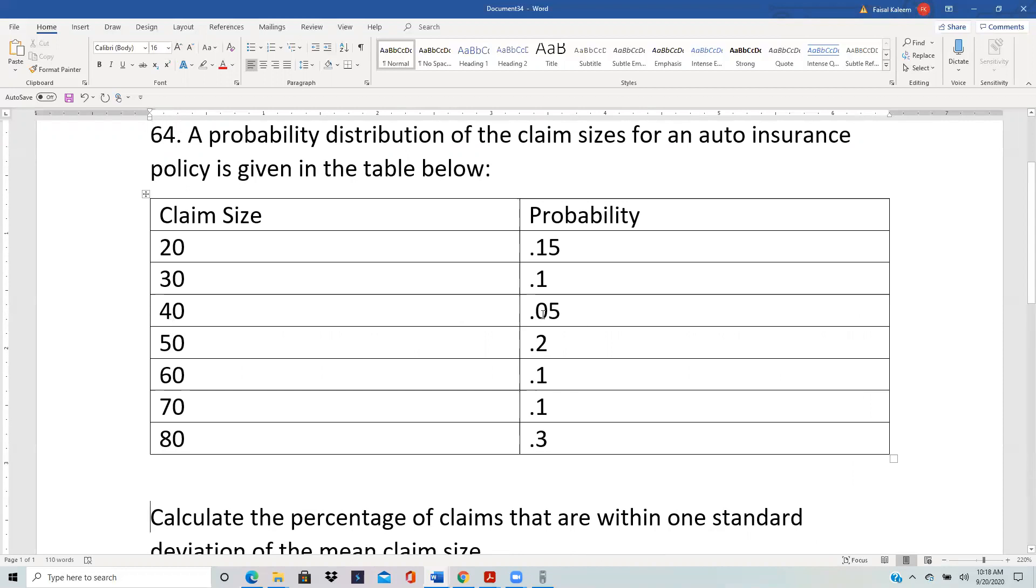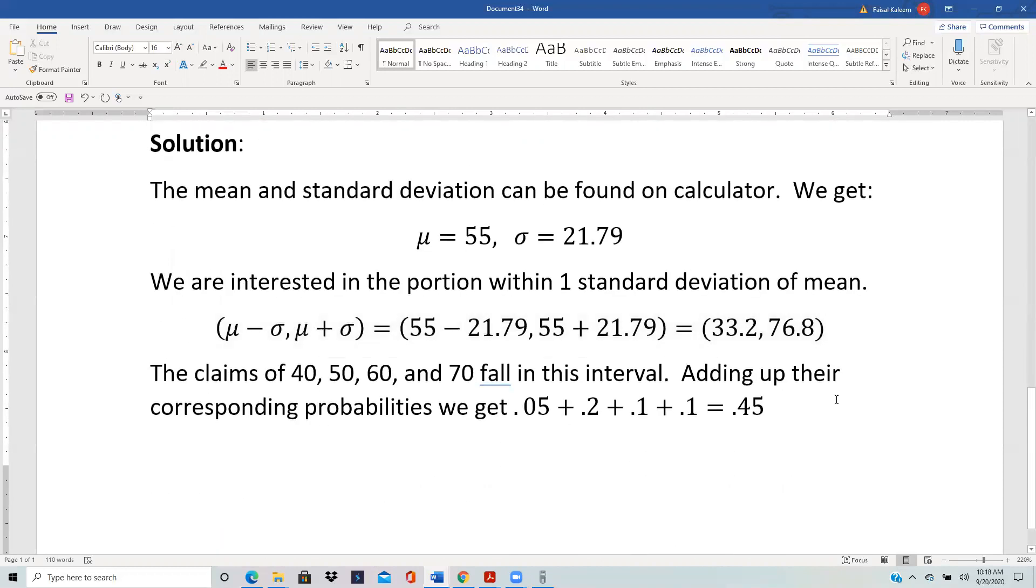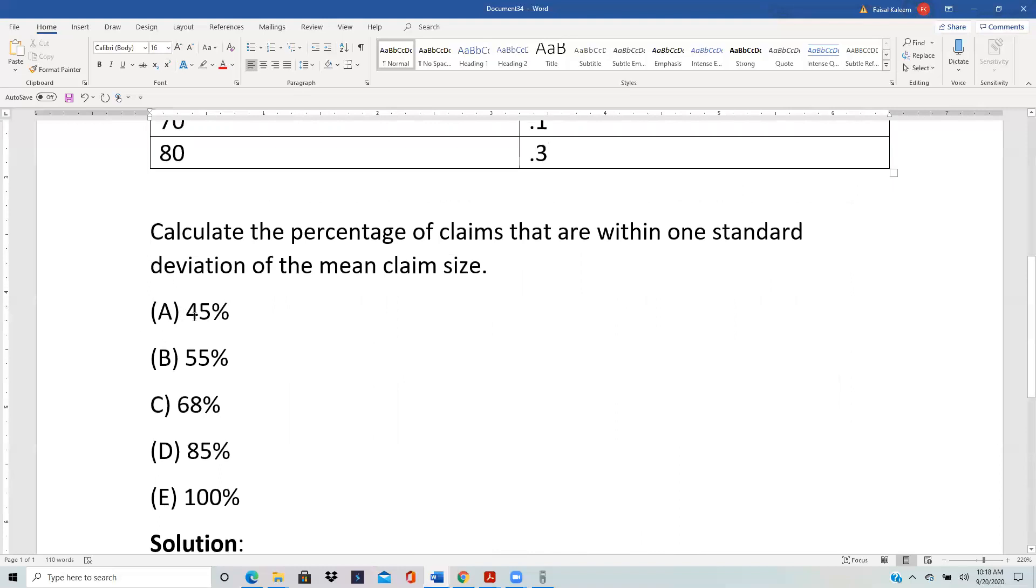So 0.05 plus 0.2 plus 0.1 plus 0.1 and that gives 0.45 which is A.